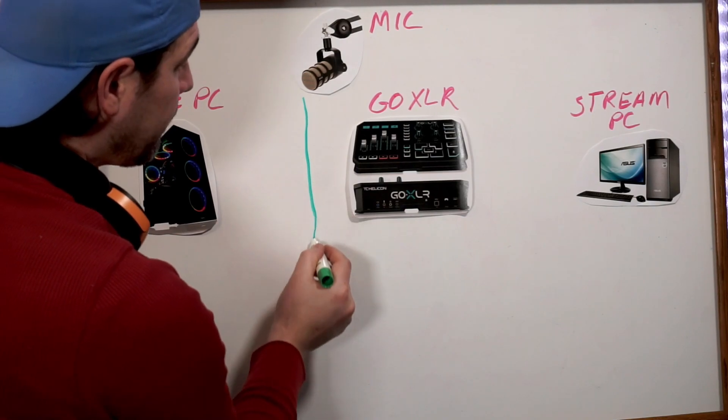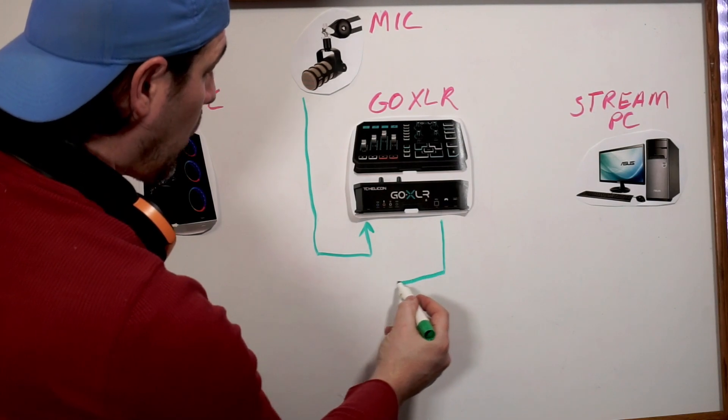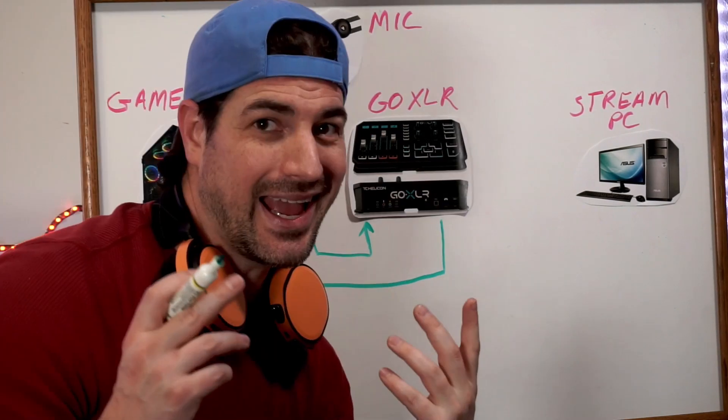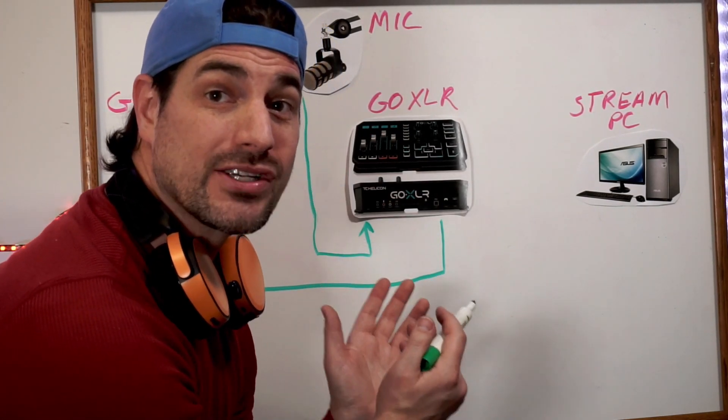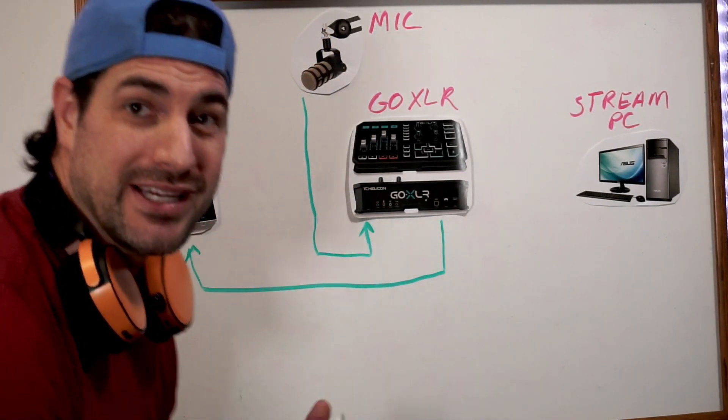Start by connecting your microphone to the GoXLR using the XLR input or the microphone input. Connect the USB from the GoXLR to our gaming PC. And I know one of the options is to connect our GoXLR to our streaming PC and run it from there. However, in this tutorial, we're going to use our gaming PC to run it.